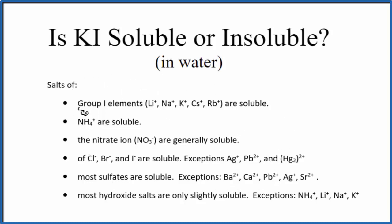The first one: Group 1 elements. Potassium is in Group 1 on the periodic table, so potassium compounds will be soluble in water. The chart is telling us that KI is soluble in water.